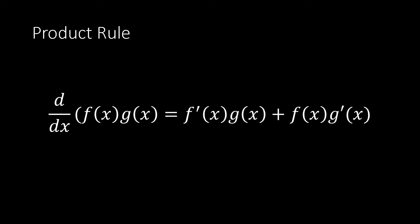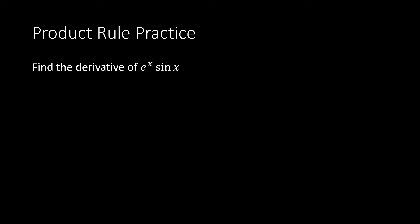This is the product rule — something we use when we have to differentiate a function that's a product of two other functions. The derivative of f(x) times g(x) is f'(x)·g(x) plus f(x)·g'(x). A quicker shorthand notation for this, cutting out the x's, is: f'g + fg'.